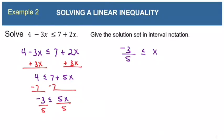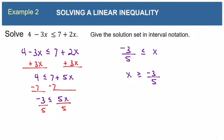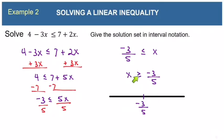Let's rewrite this. If negative 3 fifths is less than or equal to x, that means x is greater than or equal to negative 3 fifths. Think of the alligator's mouth from grade school: in the first statement the alligator's mouth is eating the x, and in the second it's still eating the x. We've just turned it around without changing its meaning. We need x on the left in order to graph.